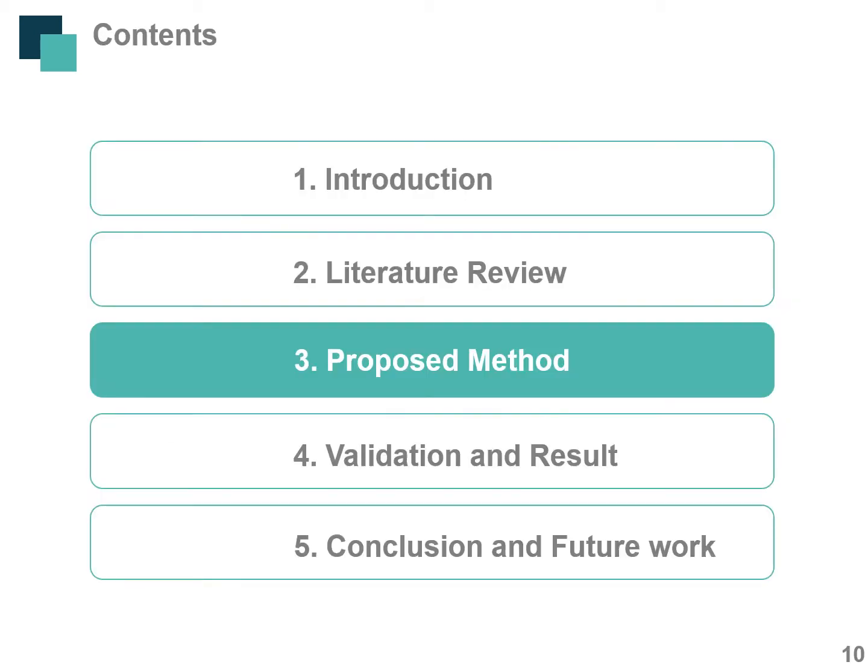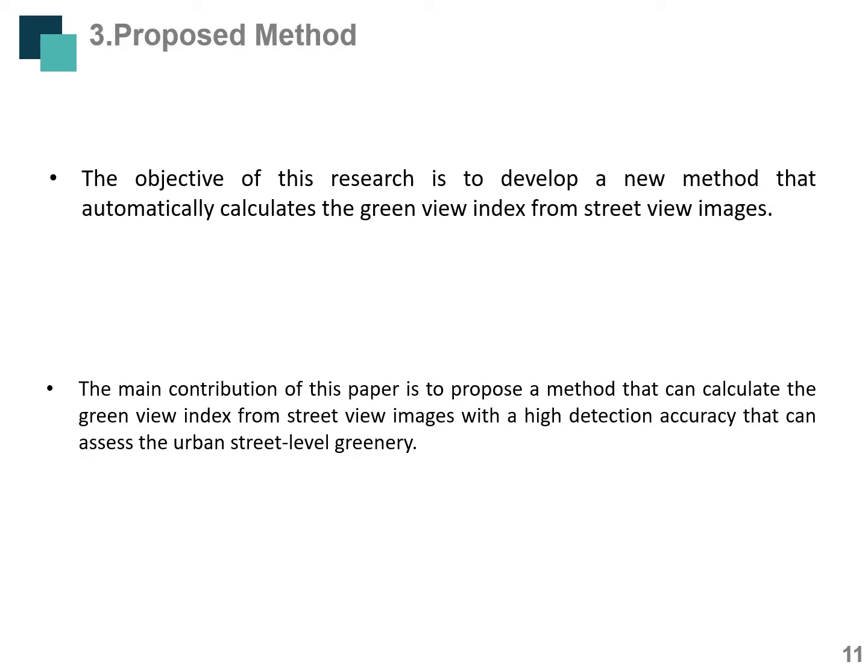The third section presents the proposed method. Based on the literature review and background, the objective of this research is to develop a new method that automatically calculates the Green View Index from street-view images. The main contribution of this paper is to propose a method that can calculate the GVI from street-view images with high detection accuracy to assist urban street-level greenery assessment. In the next part, I will explain the method we proposed, which includes three steps.